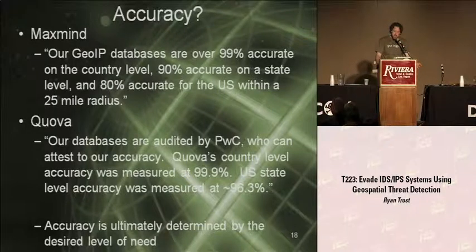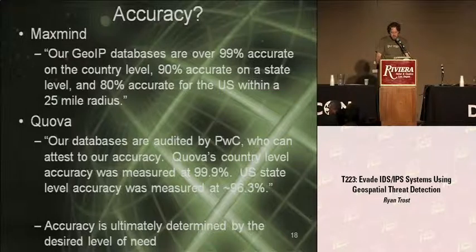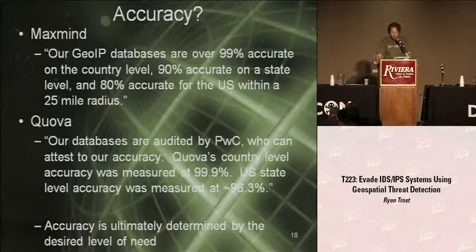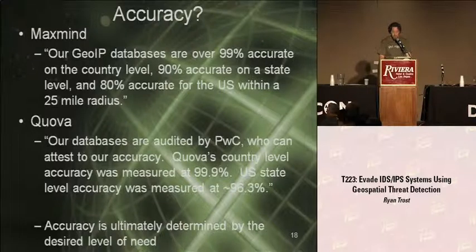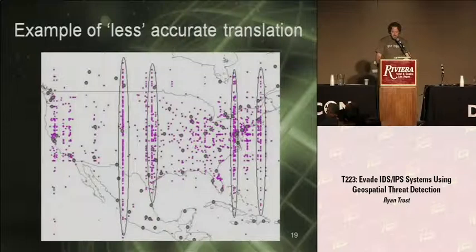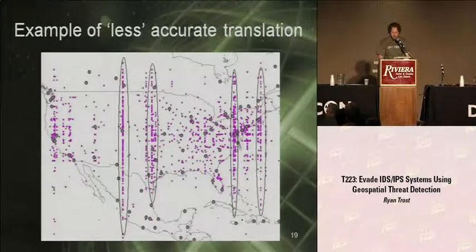Quova is a little bit different because they actually have PricewaterhouseCoopers doing their auditing. Quova's country-level accuracy was measured at 99.9%; U.S. state-level accuracy was measured at 96.3%. But again, accuracy is ultimately determined by the desired level of need. Notice how a lot of the vendors won't actually tell you their accuracy at the city level. Here's an example of less accurate translations — you can see with plotting of Snort alerts there's something called striping going on, which makes it pretty easy to determine something is wrong in their algorithm.